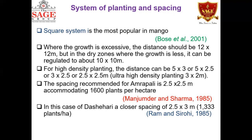At IARI New Delhi, with the Amrapalli variety using 2.5 into 2.5 meter spacing and triangular method of planting, they succeeded in accommodating 1,600 trees per hectare. They got a yield of around 18 to 20 tons per hectare compared to the conventional method, which yielded only 7 to 8 tons per hectare at the same research institute.